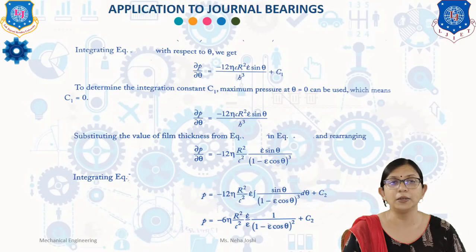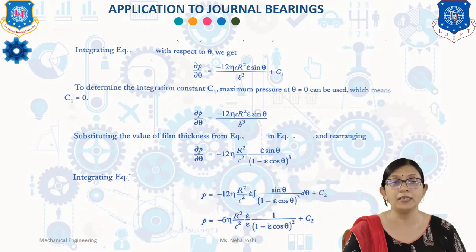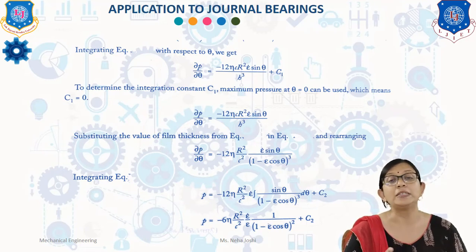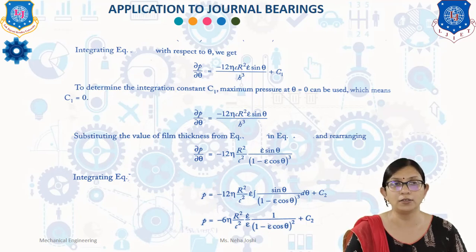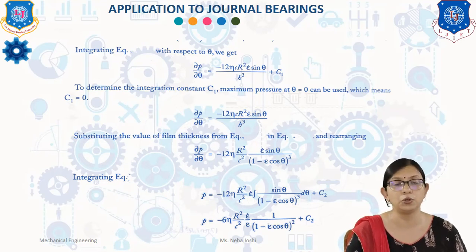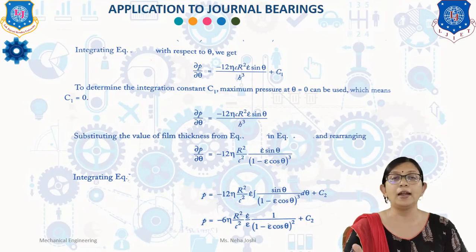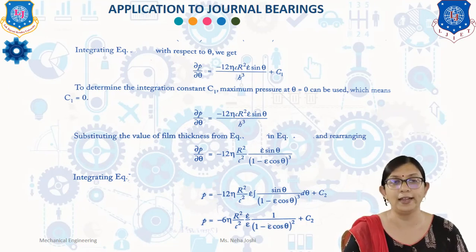By integrating this equation with respect to theta, we get: ∂p/∂θ = −12η·c·r²·ε̇·sin θ / h³ + C₁, where C₁ is the integration constant. To determine C₁, the condition of maximum pressure at θ = 0 is used, giving C₁ = 0. Therefore: ∂p/∂θ = −12η·r²·ε̇·sin θ / h³.